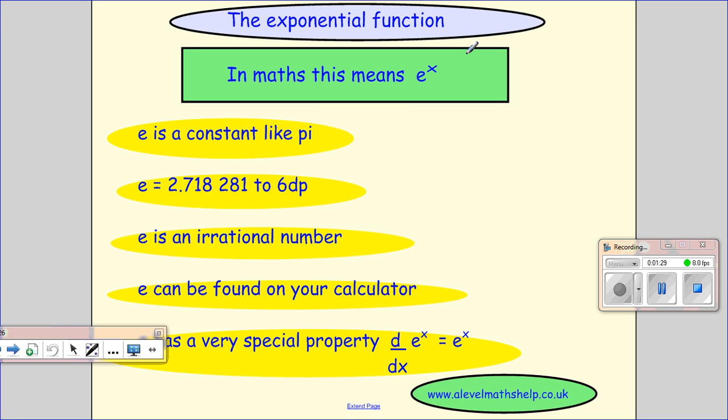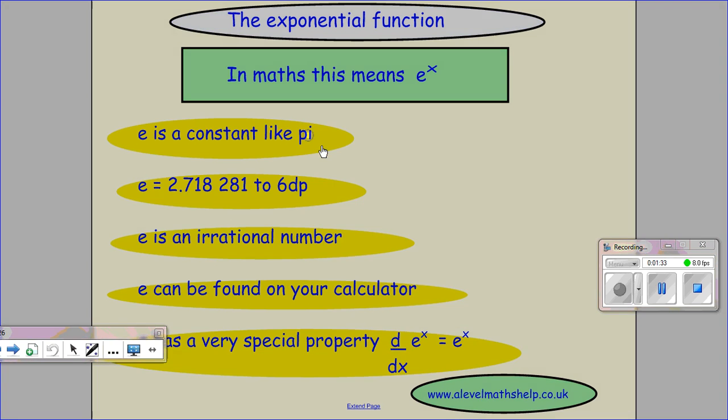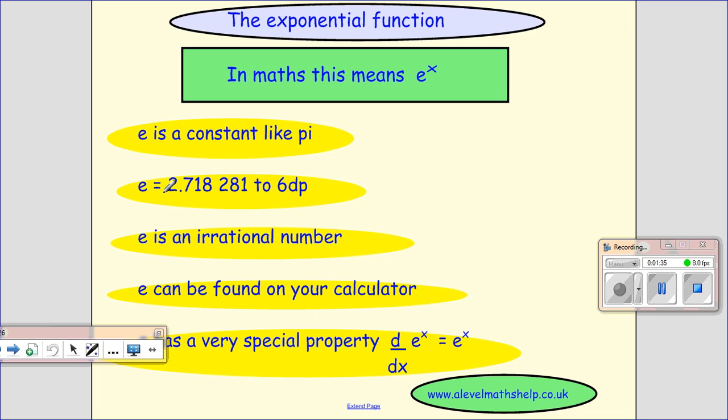So what is e? e is just like a constant. It's like pi. We've all known pi, and we know that we can give a number for pi. So for e, the number is 2.718281, and then it goes on. It's an irrational number.